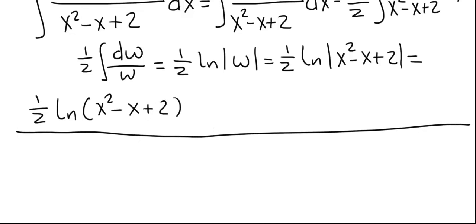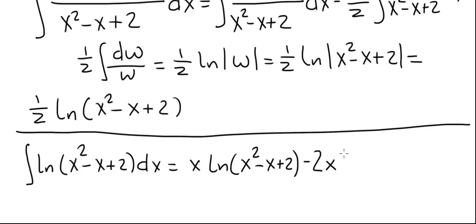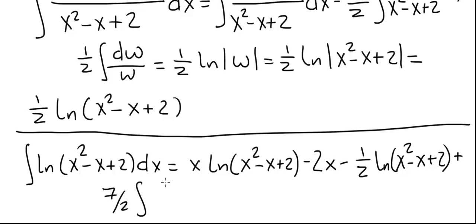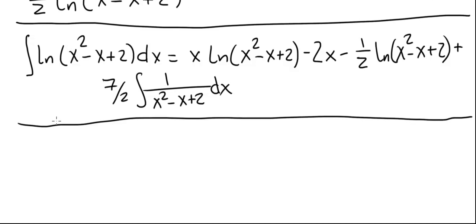Let's go back to the original problem. The integral of ln of x squared minus x plus 2 equals x times ln of x squared minus x plus 2, minus 2x, minus one half natural log of x squared minus x plus 2, plus 7 halves times the integral of 1 divided by x squared minus x plus 2. That is the integral we still need to evaluate.